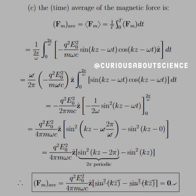Doing a u-sub on sine goes to cosine, integrate back, and evaluate through. Plugging everything in, we get sine²(kz − 2π) − sine²(kz). Since sine is a 2π periodic function, this gives sine²(kz) − sine²(kz) = 0. So the average magnetic force is zero.